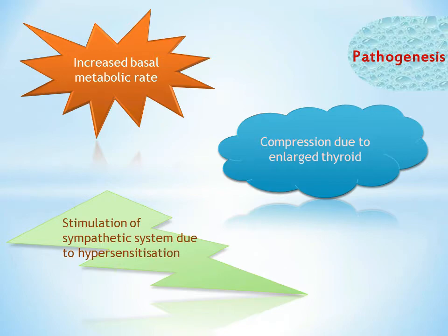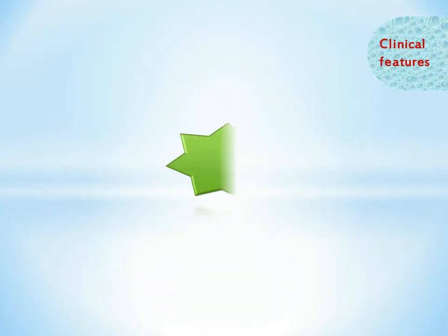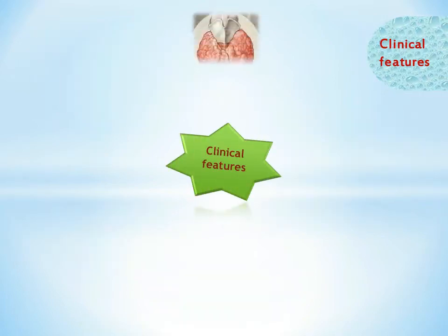It is noteworthy that every system of our body is affected in hyperthyroidism. The clinical features include goiter — there can be a diffuse or nodular enlargement of the gland. Diffuse goiter indicates Graves disease while nodularity indicates toxic nodular single or multiple goiter.